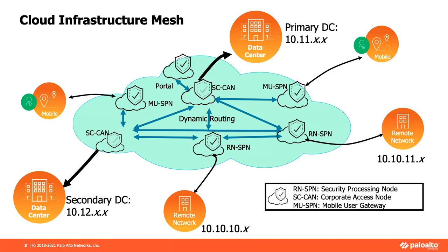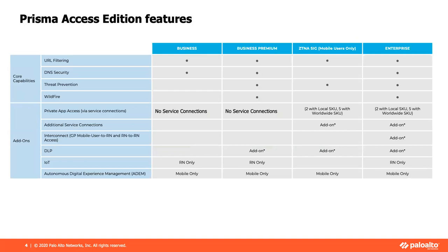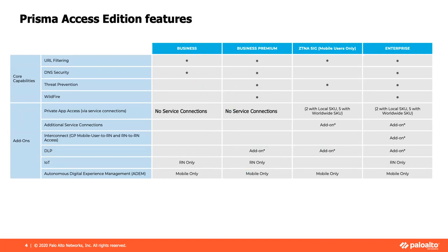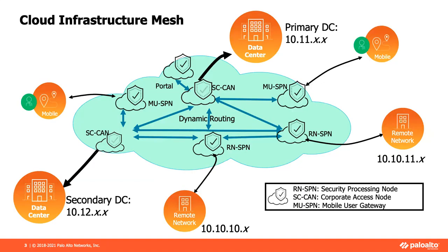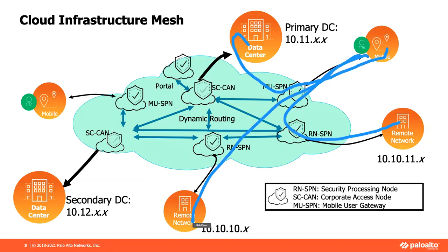There are licensing options for Prisma Access that give you the ability to go straight from a remote network out to the internet, or for mobile users to go straight out to the internet. There's also a licensing level that enables all different components — remote networks talking to mobile users, mobile users talking to data centers and remote networks and each other. This licensing enables communication between everybody.